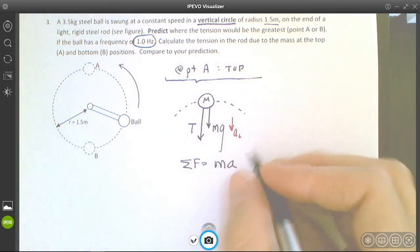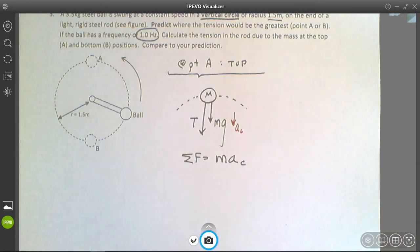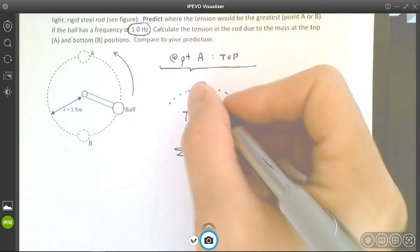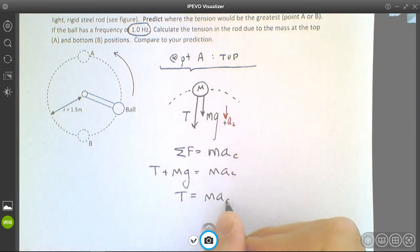It's radially accelerating, meaning it's centripetally accelerating, so we put an ac on there. We look at the sum of the forces. I've chosen down as the acceleration, so I'm going to make that way positive. I've got tension plus mg equals m ac. The tension will therefore be m ac minus mg.